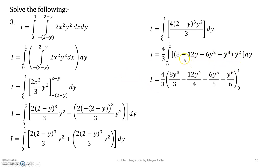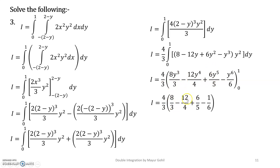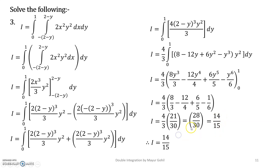Simplifying gives 4/3 × (2 − y)³ × y². Expanding (2 − y)³ using the (a − b)³ formula and multiplying y² inside, we perform the integration. The terms integrate as: 8y² → 8y³/3, 12y³ → 12y⁴/4, 6y⁴ → 6y⁵/5, and y⁵ → y⁶/6. With limits 0 to 1, plugging in gives 8/3 − 12/4 + 6/5 − 1/6.